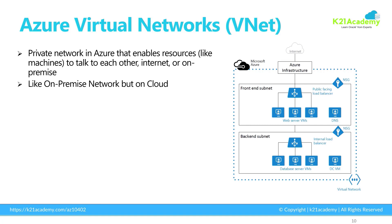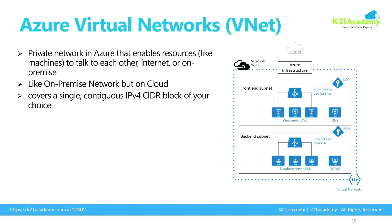The virtual network you see in cloud is similar to the network you've been using on-premise. Your machines in your on-premise environment go onto different networks of your choice. Something similar you do on cloud as well. A virtual network is nothing but a continuous block of IPv4 — or it could be IPv6 as well — CIDR blocks of your choice.